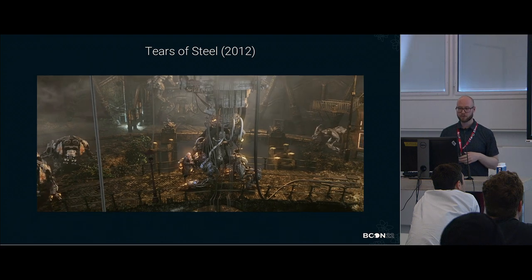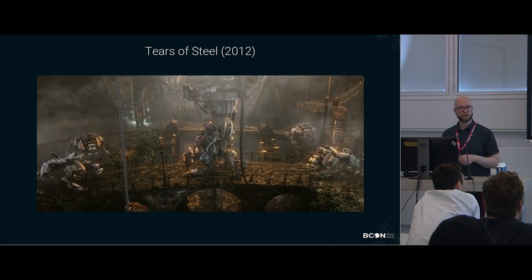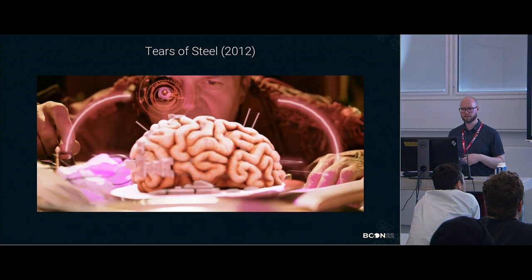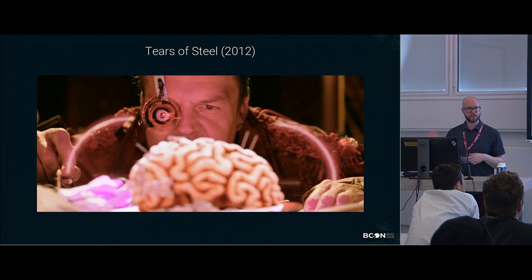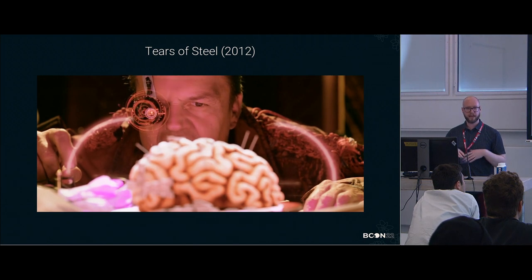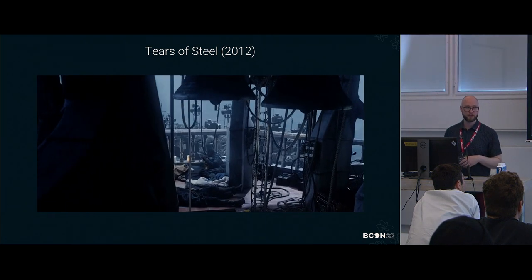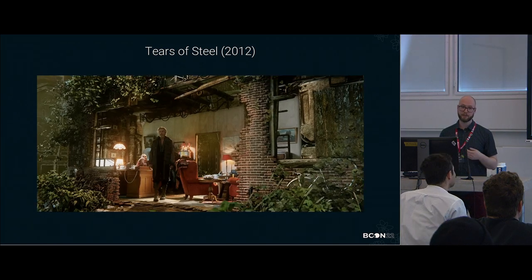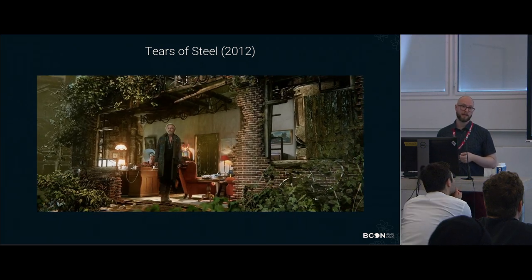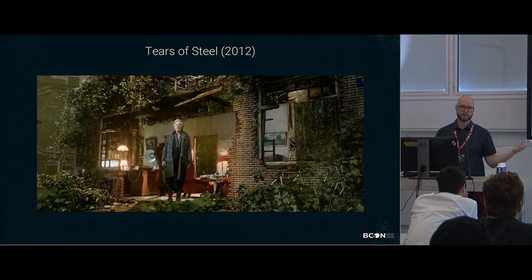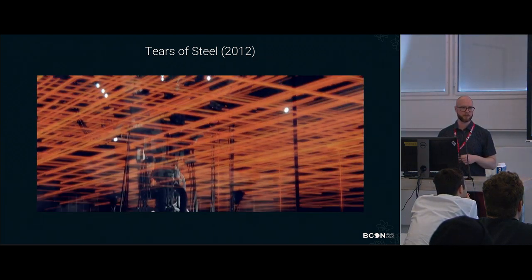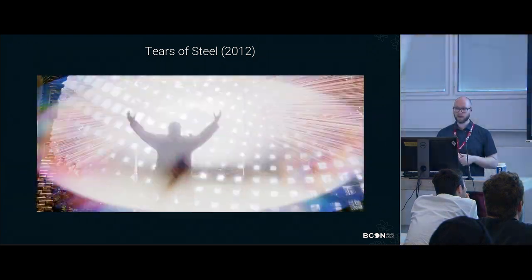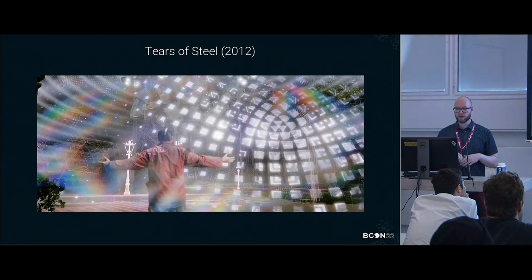Tears of Steel was the first use of Cycles in any real production we did. It came out about half a year before that, and this was really the testing ground of everything Cycles came to be. We had a lot of issues — we noticed that it's really hard to light interior spaces with Cycles, and also really hard to have many different lights just by the nature of how the path tracing algorithm was implemented back then. So there was a lot of slowness going on.